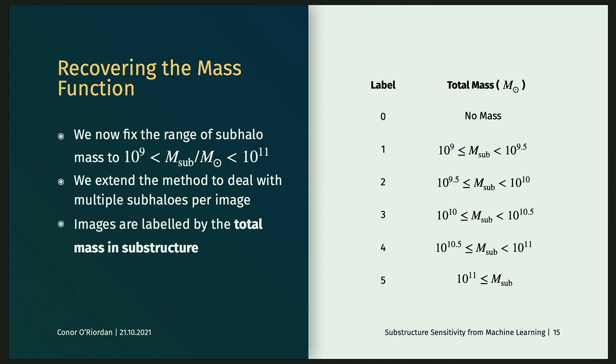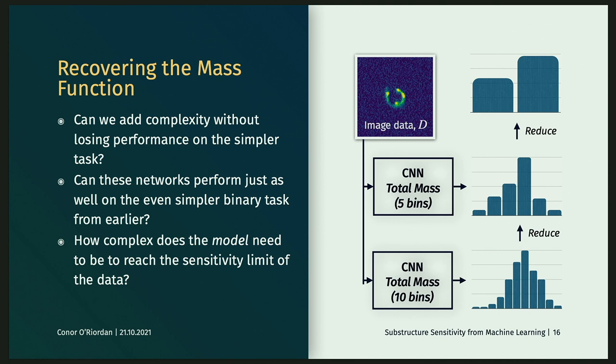So, if we want to get an idea of what kind of mass functions we could rule out or confirm with Euclid data, we need to expand the problem slightly, because in a real mass function, there are multiple subhalos, or there's a probability of being multiple subhalos per image. And so, now we train the network to classify images based on their total mass in substructure according to these labels. Five bins for mass, an extra bin for no mass at all. And now we're looking at, can we use these more complicated models and still do the simpler binary classification task with the same model as before?